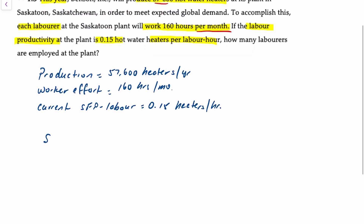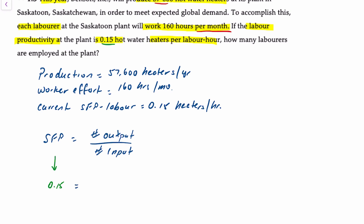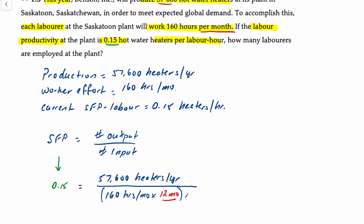Recall that the formula for single-factor productivity is equal to units of output divided by units of input. In this case we're told that the single-factor productivity is 0.15, so that equals the output of 57,600 heaters per year divided by the input of 160 hours per month times 12 months, multiplied by x, which is the number of workers.